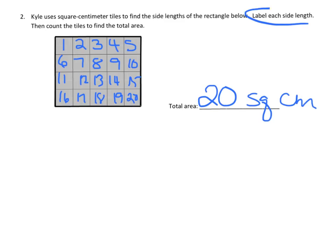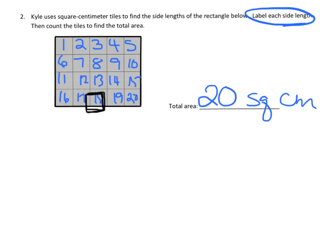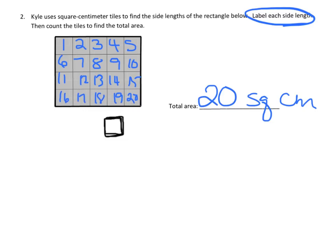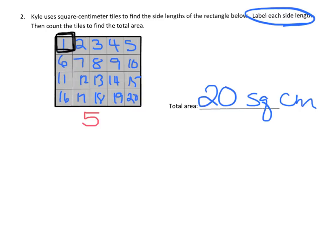Now we also want to label each side length. To do that, we take a tile and figure out how many tiles it takes to go across and how many to go up and down. Going across: one, two, three, four, five — so it takes five tiles across, and I'll write the number five. Going up and down: one, two, three, four — four tiles. So I label that four, and sure enough, four times five equals twenty.